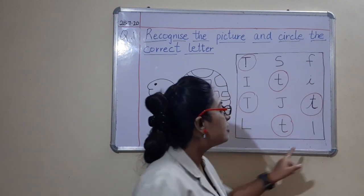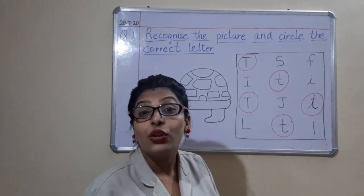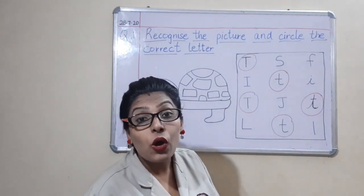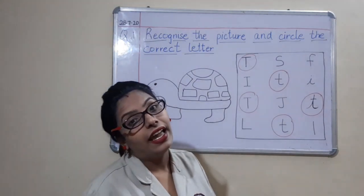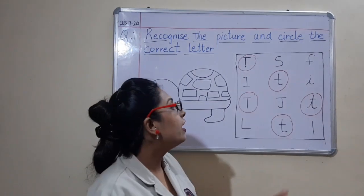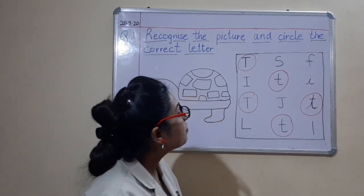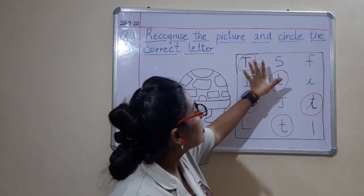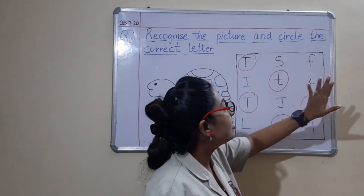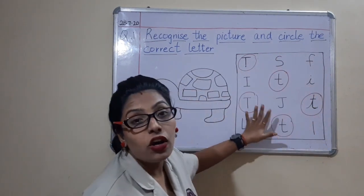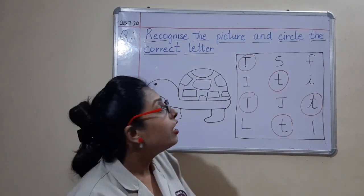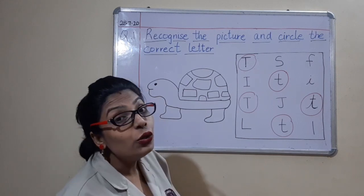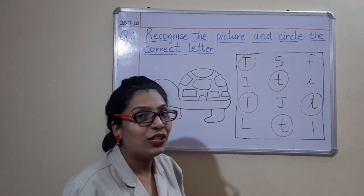Is this letter T? No, this is small block letter L — so we will leave it. Now we have seen wherever we can find letter T in this box and we have circled them. Now we will move on to the second question.